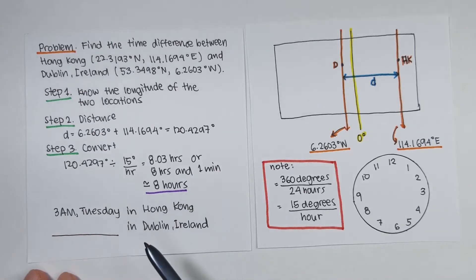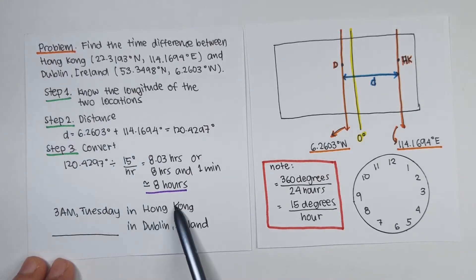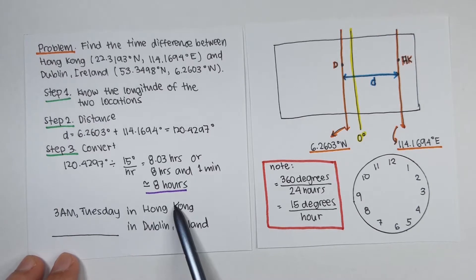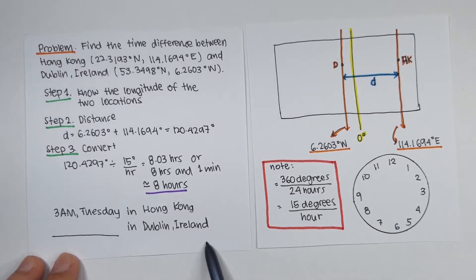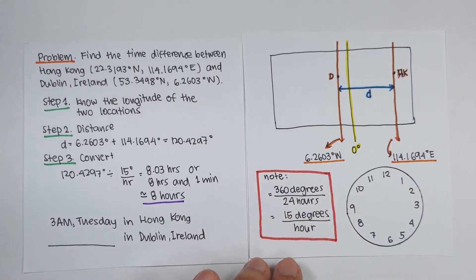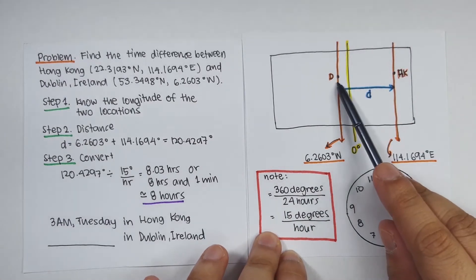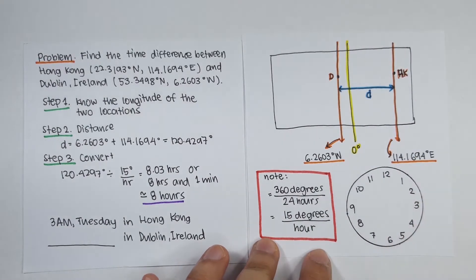Hong Kong is 8 hours ahead of Dublin, Ireland. So if it is 3 a.m. Tuesday at Hong Kong, what time is it at Dublin? You have to move 8 hours counterclockwise since Dublin time is behind Hong Kong time.